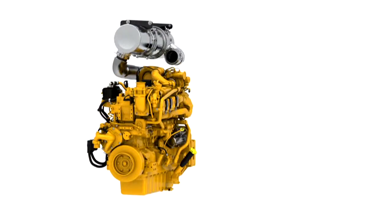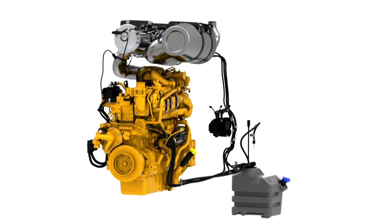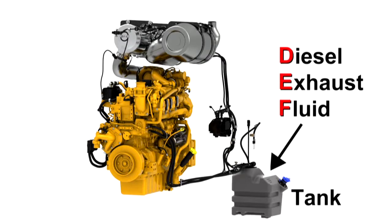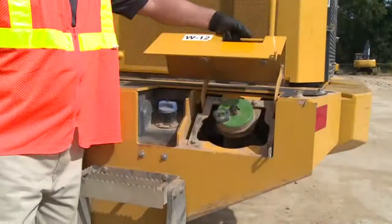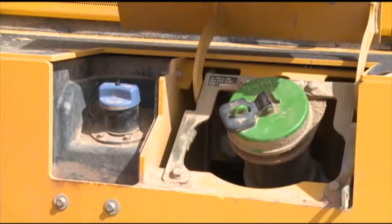On loaders equipped with final Tier 4 emission engines, an additional process is added to reduce nitrous oxide emissions, referred to as NOx. Diesel exhaust fluid, or DEF, is injected into the exhaust after the DOC-DPF filter that was just explained. A chemical reaction occurs that changes the NOx into ammonia. The ammonia is removed by passing it through a filter. On units with final Tier 4 engines, the diesel exhaust fluid, or DEF, tank fill is also located here.